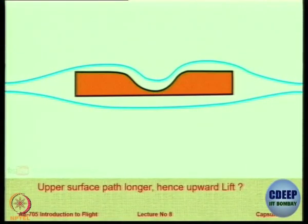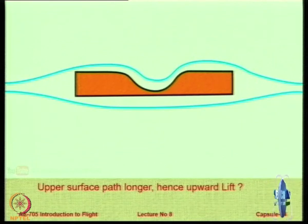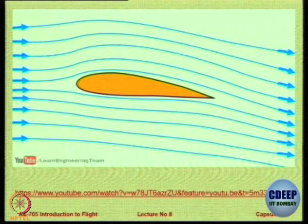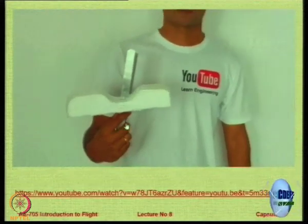Now, if the equal time theory were correct, what would happen to a symmetric body placed in a flow — would it generate lift upward or downward? If you find others still support the equal time argument, ask them to generate lift from a symmetric surface. If they are too lazy, we will do it for them — let us look at some experiments.